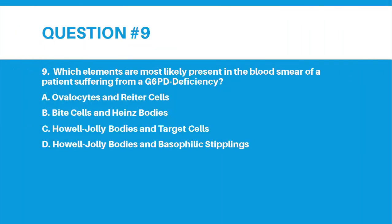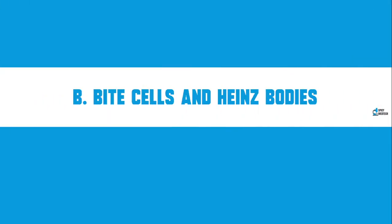Number 9: Which elements are most likely present in the blood smear of a patient suffering from a G6PD deficiency? Letter A, Ovalocytes and Reiter Cells. Letter B, Bite Cells and Heinz Bodies. Letter C, Howell-Jolly Bodies and Target Cells. Letter D, Howell-Jolly Bodies and Basophilic Stipplings. The correct answer for number 9 is Letter B, Bite Cells and Heinz Bodies.